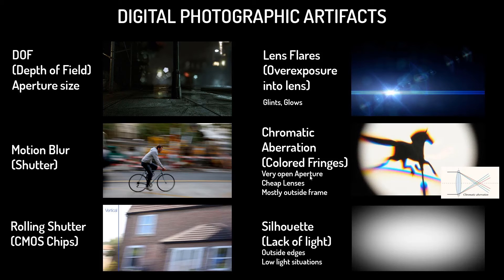Chromatic aberration is something people barely touch upon. It's a very subtle effect that usually comes with cheap lenses at very open apertures — that combination creates weird fringes, purple or green, orange or blue, mostly on the outside of the frame. The better the lens quality and ground glass, the less you'll have these artifacts. Vignetting — the silhouette effect — is the lack of light on outside edges, which are darker because you're shooting through a circular lens barrel; light comes in strong at center but loses itself along the edges.